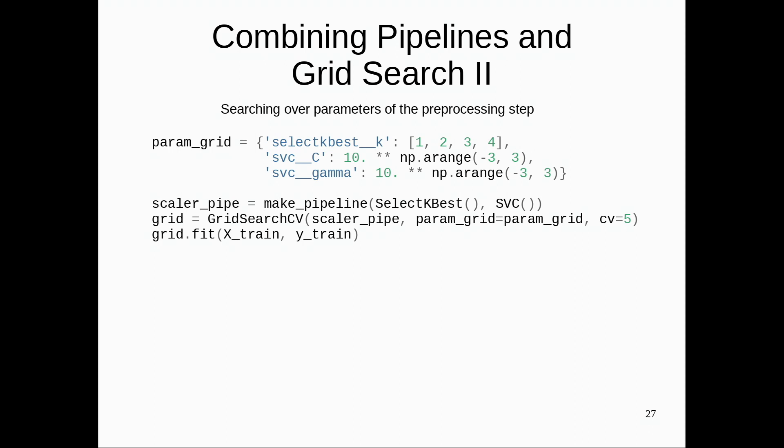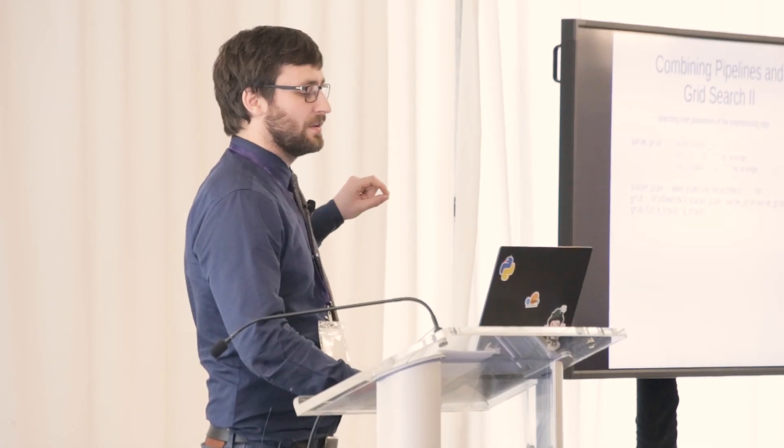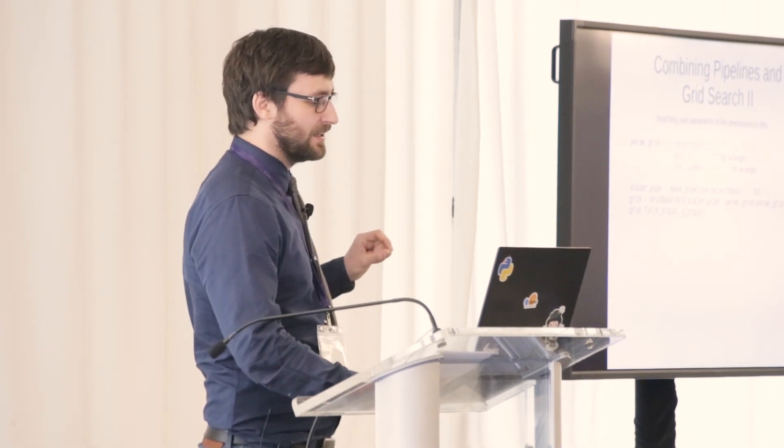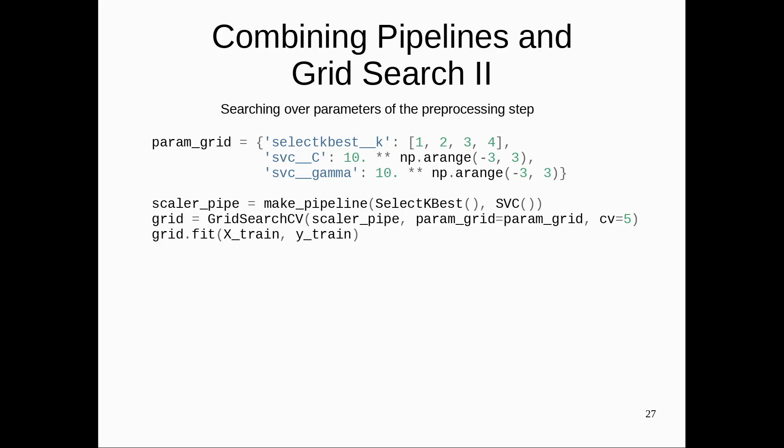So here I have this pipeline, SelectKBest selects the k best features according to p-values, then the support vector machine, and now grid search the best value for k in SelectKBest and the best value for C and gamma in the support vector machine. And so this allows me to search all these things jointly, and they're all encapsulated in this single grid object.